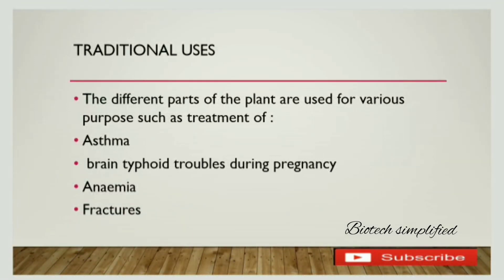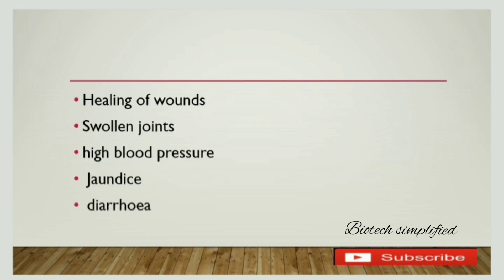Different parts of the plant were used in traditional medicine for curing different diseases. Diseases treated traditionally include asthma, brain and typhoid troubles, complications during pregnancy, anemia, fractures, healing of wounds, swollen joints, high blood pressure, jaundice, and diarrhea.